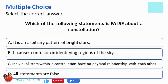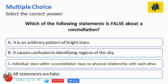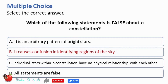Multiple choice, select the correct answer. Which of the following statements is false about a constellation? A. It is an arbitrary pattern of bright stars. B. It causes confusion in identifying regions of the sky. C. Individual stars within a constellation have no physical relationship with each other. D. All statements are false. The correct answer is B — it causes confusion in identifying regions of the sky.